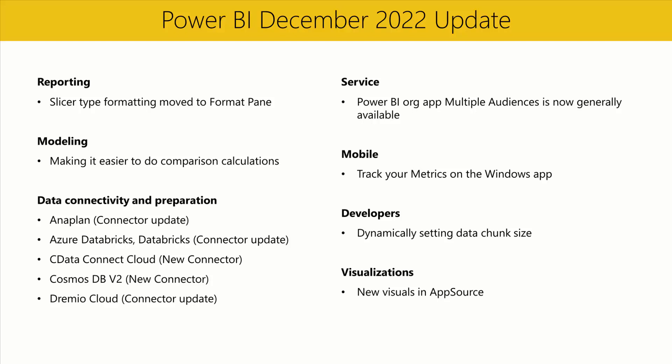Next, in the mobile section, we've brought Power BI metrics to the Windows app, allowing you to monitor your metrics, scorecards, and even check in progress all directly from the Windows app. In the developer section, we've enhanced the Fetch More Data API to allow report authors to set the data chunk size dynamically by using the new property, Data Reduction Customization. This is available with the new 5.2 API release. For more details, check out the article linked in the video description below.